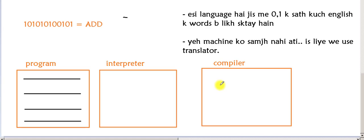For example, suppose you have written a small program in C++. What does the interpreter do? The interpreter takes the program and converts it to machine language line by line — it takes the first line, converts it to machine language, then moves to the next line, converts it, and so on until the last line.